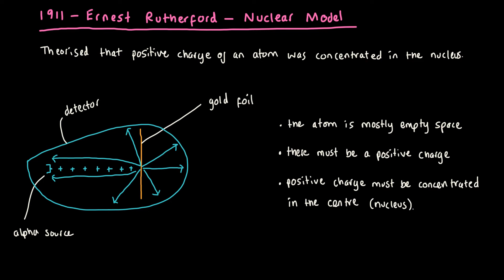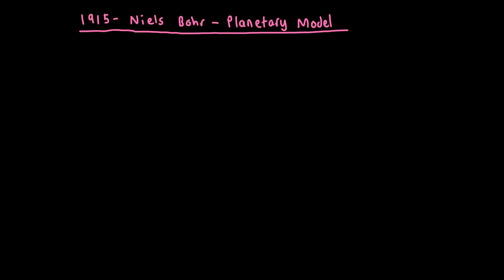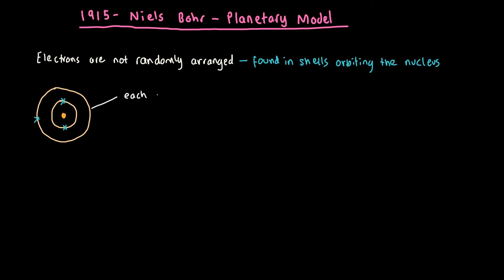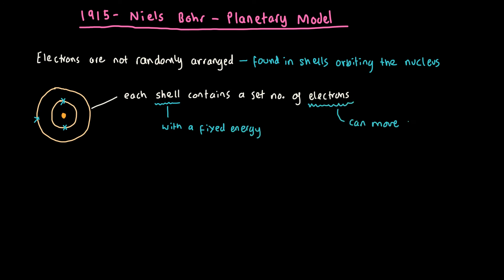In 1913, Niels Bohr came up with the planetary model of the atom. He said that electrons are not randomly arranged — they are found in shells orbiting the nucleus. He said that each shell contains a set number of electrons, and that each shell has a fixed energy. Electrons can move between shells, and when they do, they will either emit or absorb electromagnetic radiation.